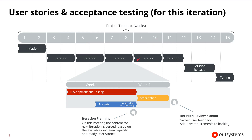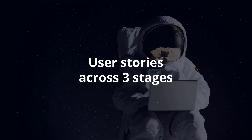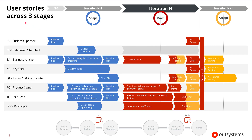As we look inside this iteration, we begin to realize that the development and testing work is being done on user stories from the previous iteration. The analysis work is actually being done on user stories for the next iteration. And in stabilization, we're focusing on the user stories that we're currently developing. Let's look at things from a different perspective and focus on the user stories as they move across all three stages, and look at their lifecycle.